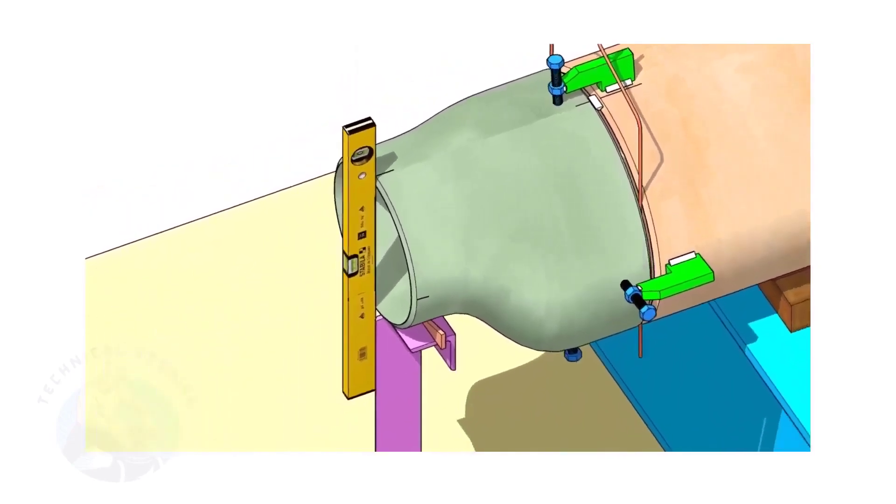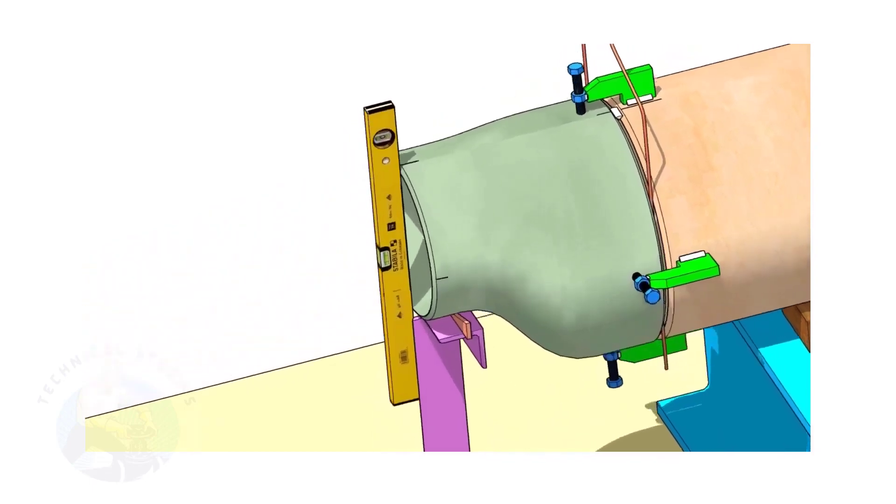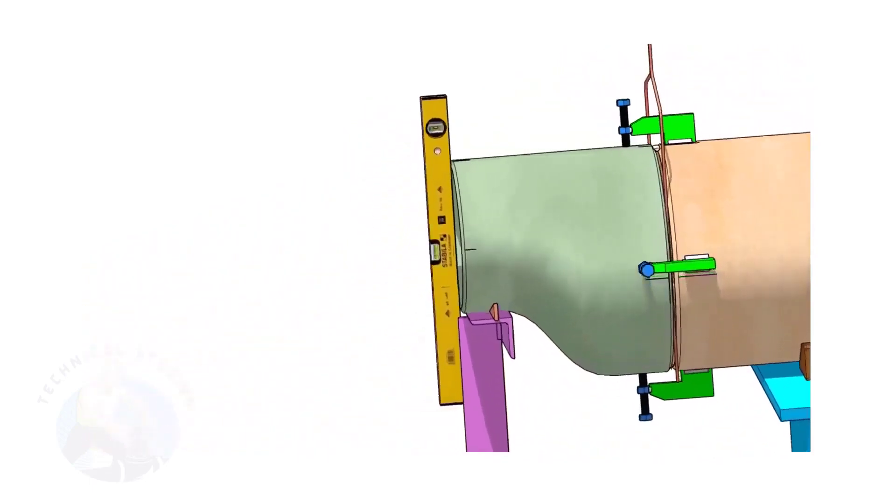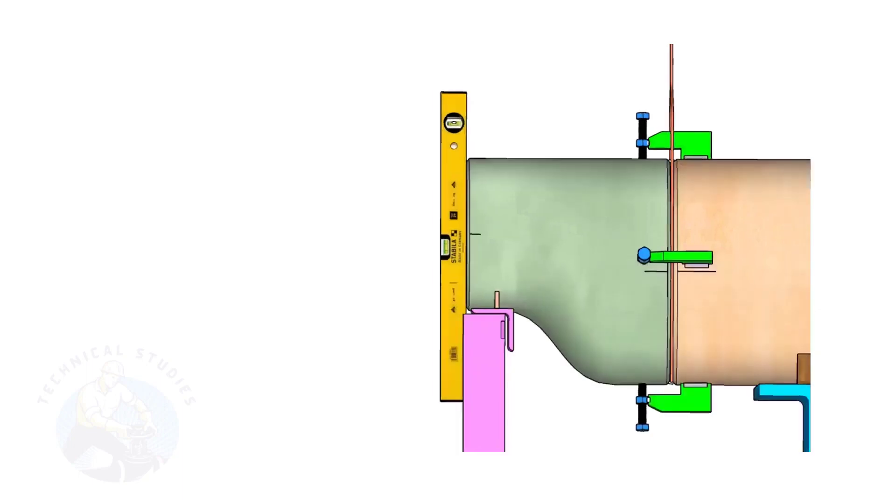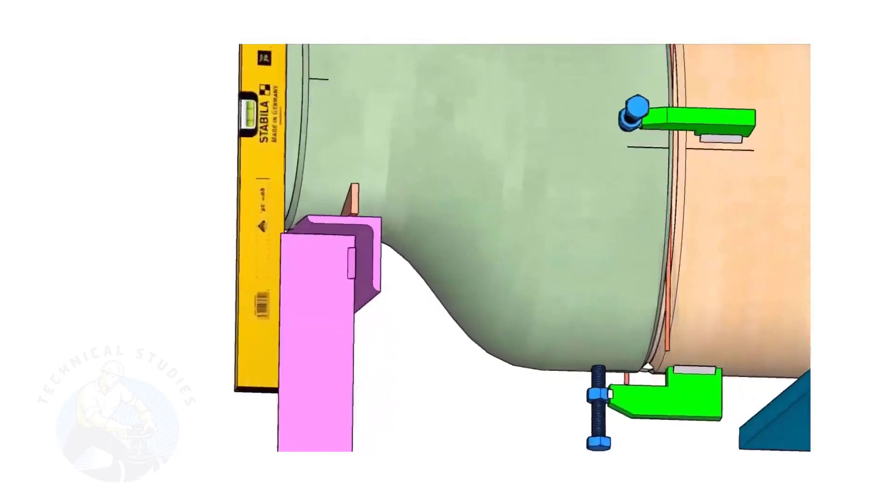Correct the levelness of the outer face of the reducer. Tack weld in the bottom side of the joint.